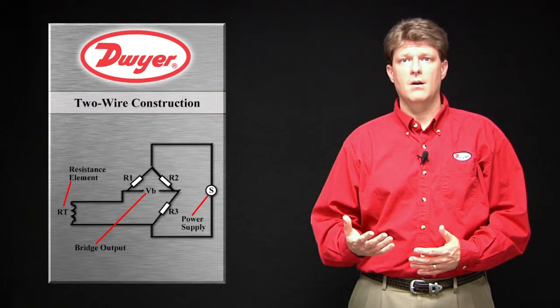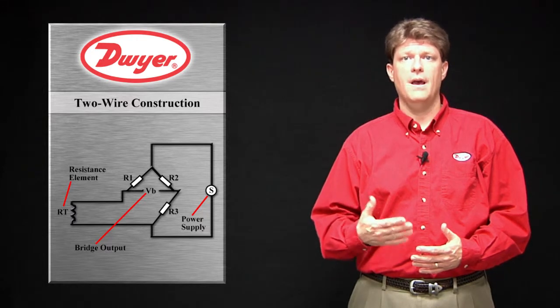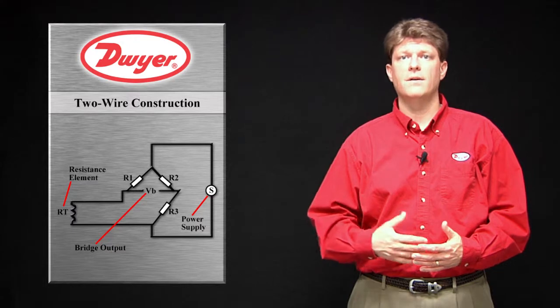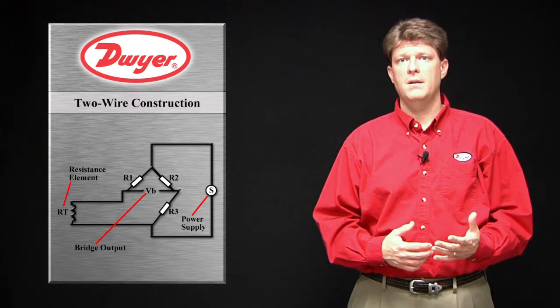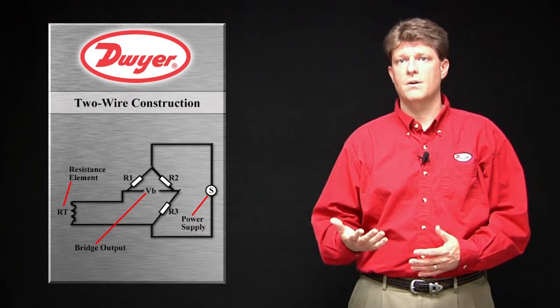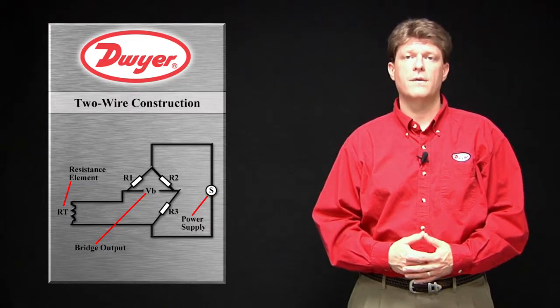The leads into the RTD in a 2 wire circuit have a resistance of their own that is not accounted for and can create significant error. A 30 meter lead wire can add 1 to 5 ohms to the circuit. Typically, this type of circuit can be used with up to 100 meters of cable.